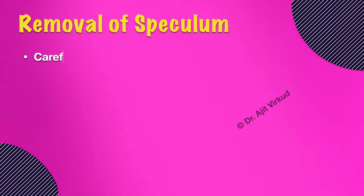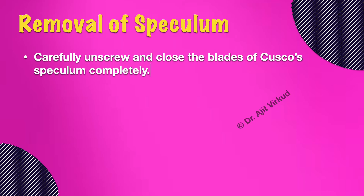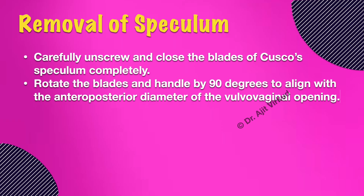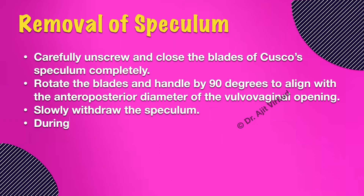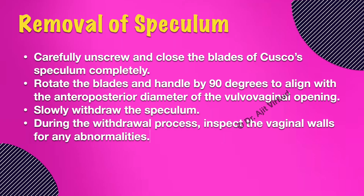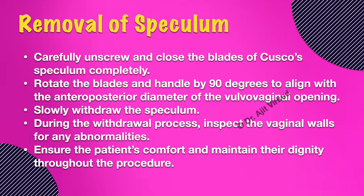Carefully unscrew and close the blades of Cusco's speculum completely. Do not allow the lax vaginal walls to get pinched between the blades when closing them. Rotate the blades and handle by 90 degrees to align with the anterior-posterior diameter of the vulvovaginal opening. Slowly withdraw the speculum. During the withdrawal process, inspect the vaginal walls for any abnormalities. Ensure the patient's comfort and maintain her dignity throughout the procedure.